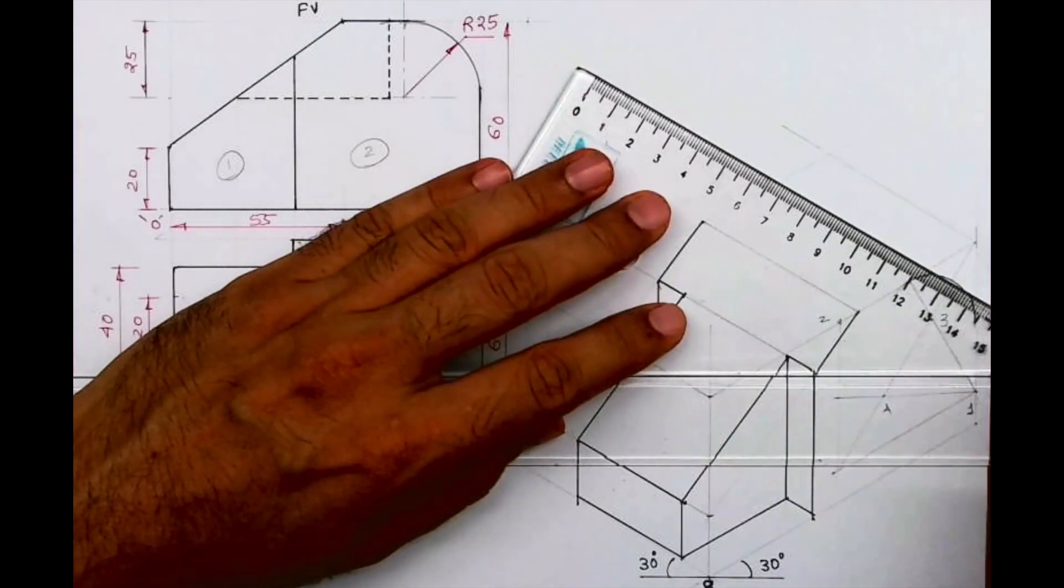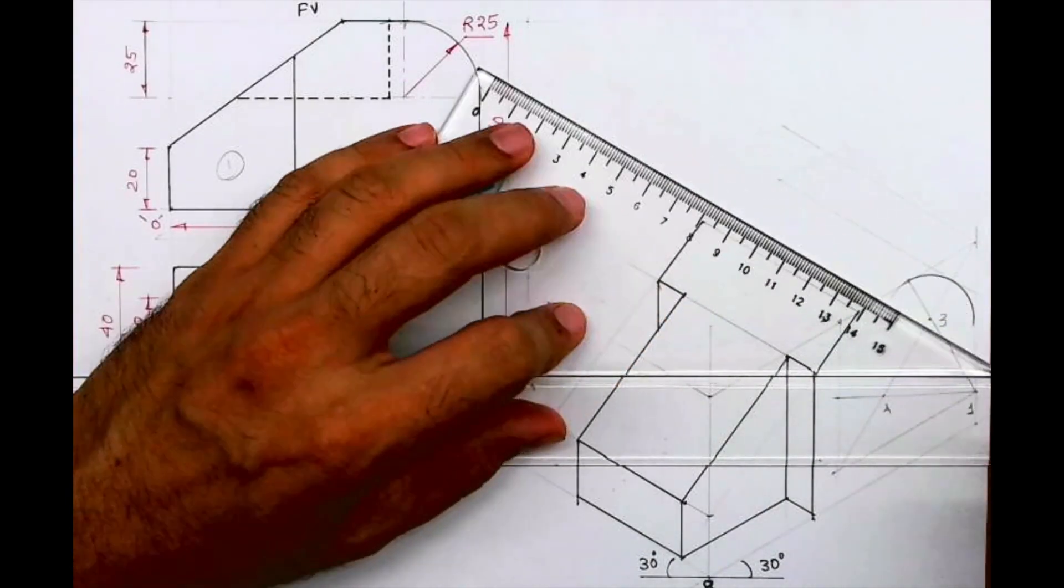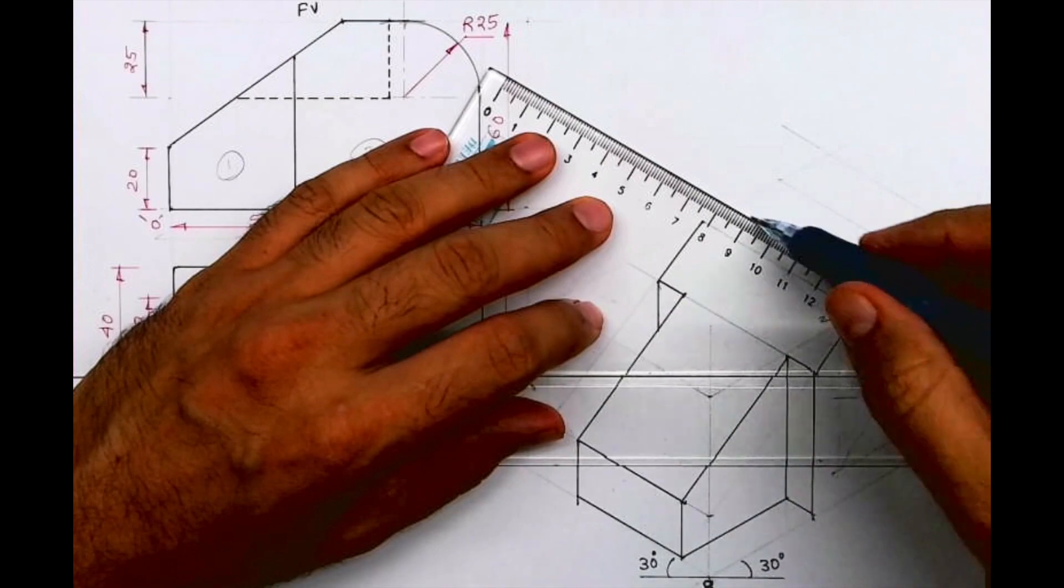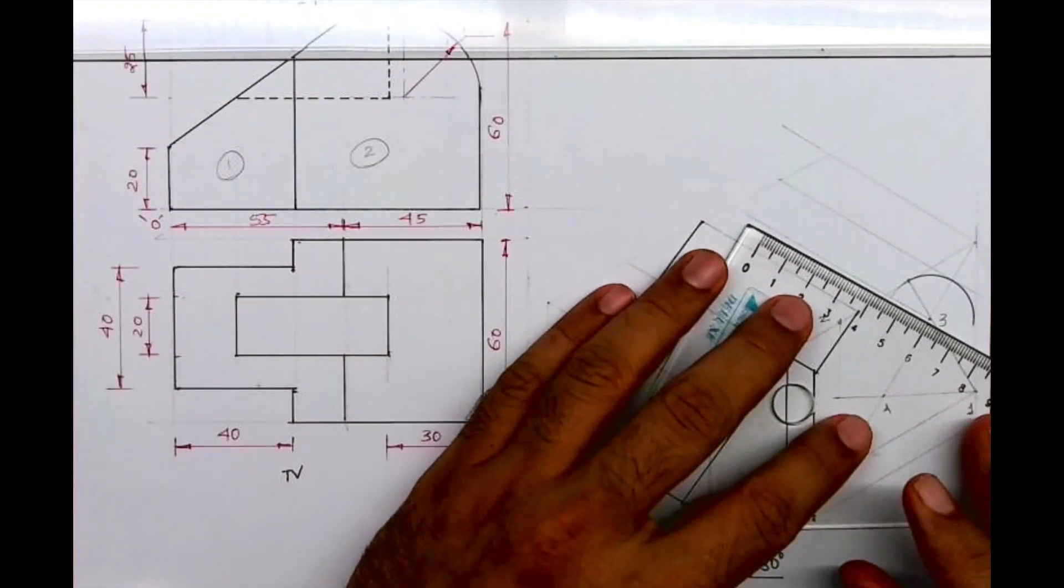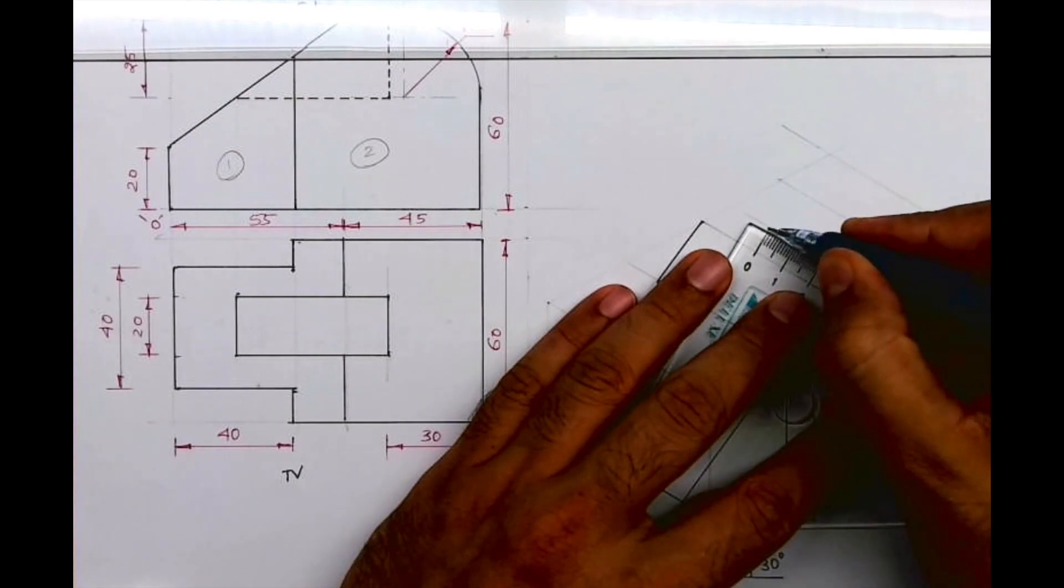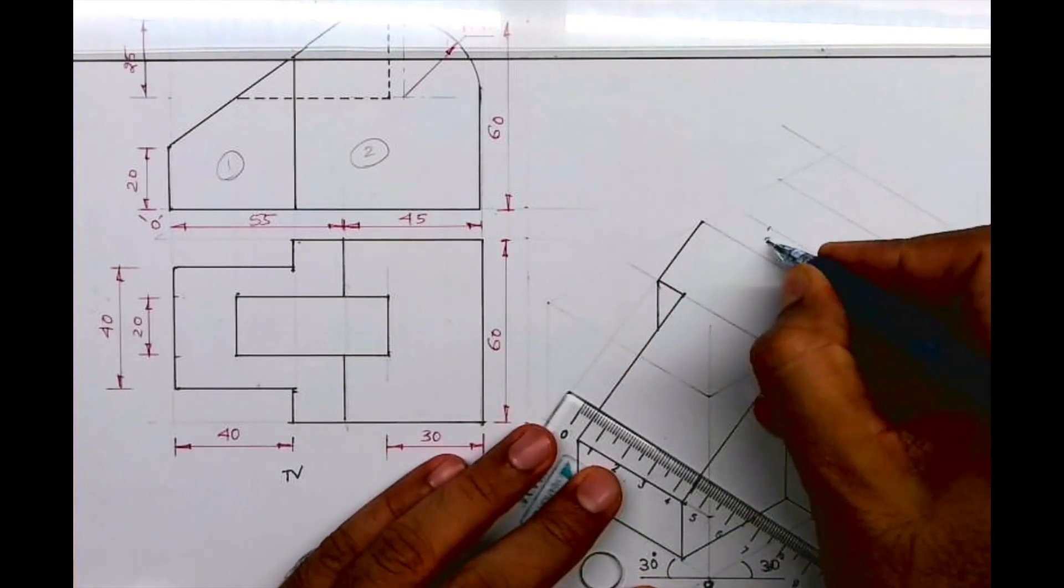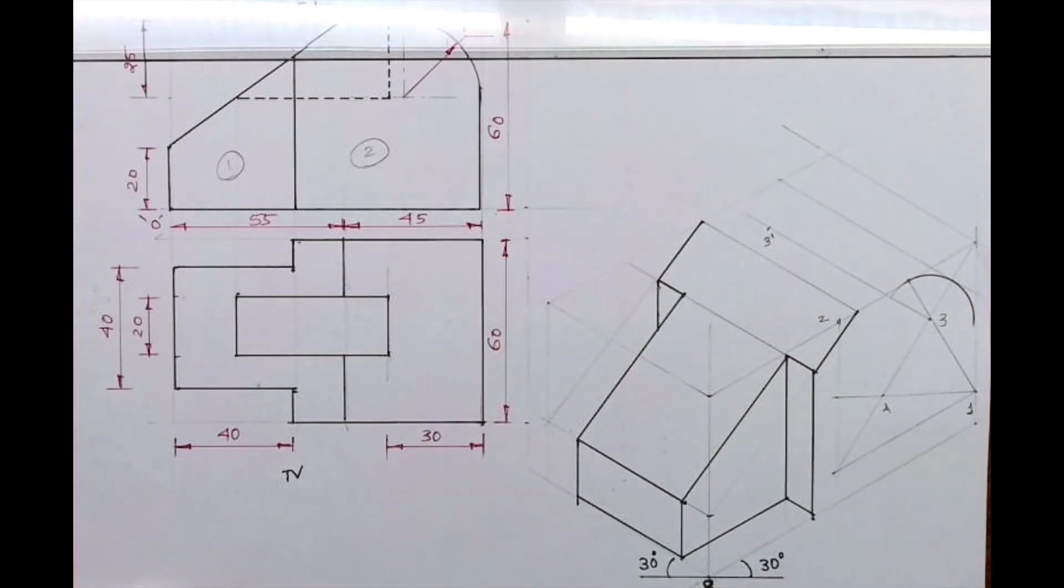And then you take this behind. Take this point three also behind. How much is it going behind? 60. So from here you go behind by 60. Three dash.